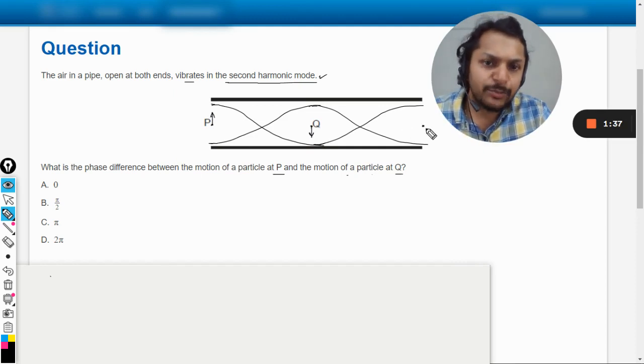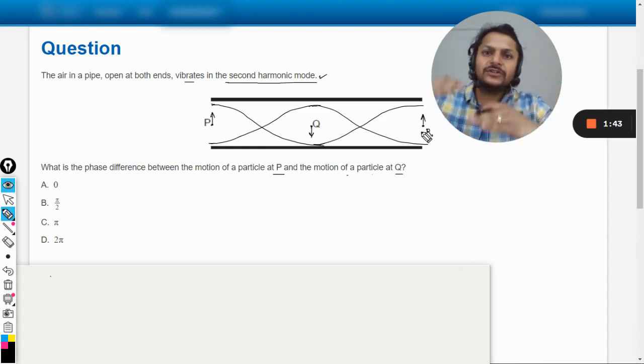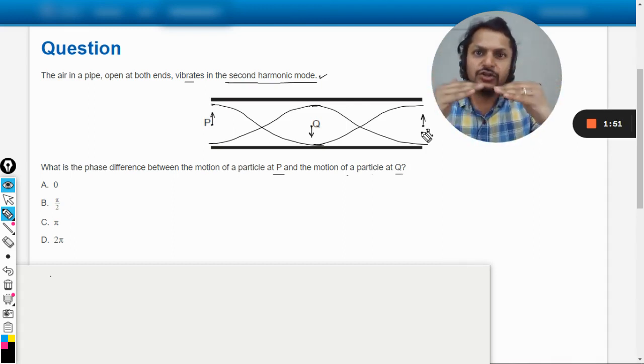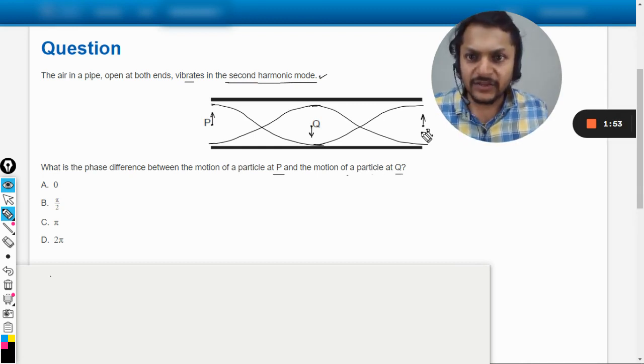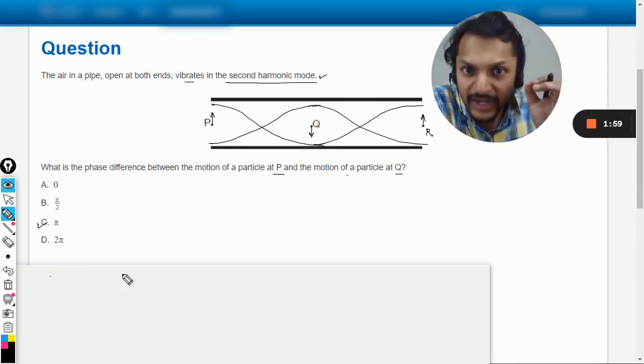And let us say there is another point here which is R, so R will be moving upward again. So it's always alternative - like one is going up and then they come to zero again, and then they move like this and then again zero. So this thing will move like this only, there is no other way that they would be moving. So if you see this thing, obviously our answer comes out to be equal to pi.